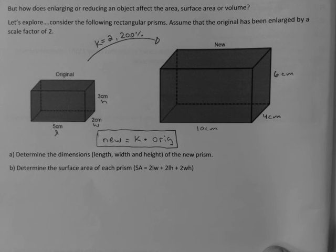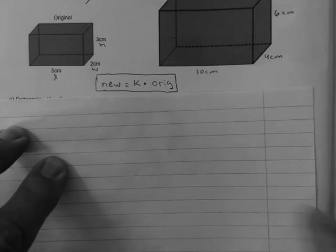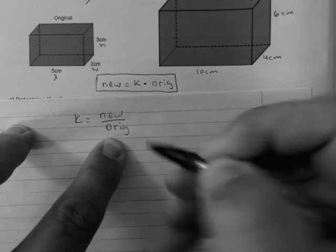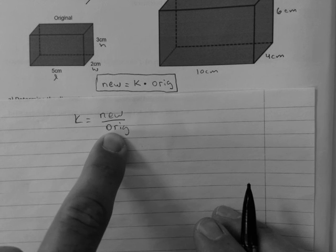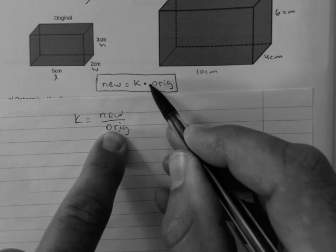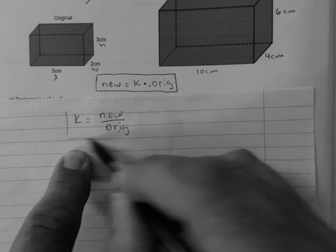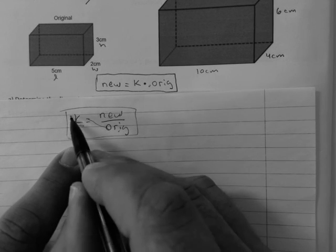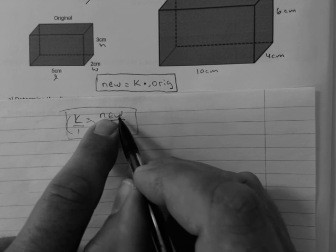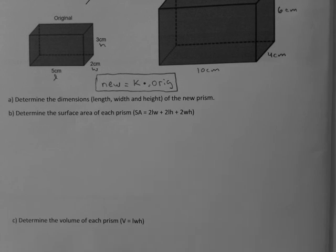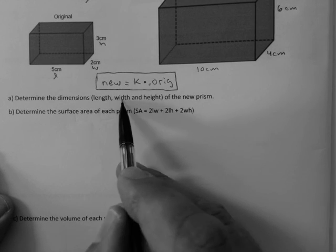But I need you to see that everything is connected. If I could just remind you, k is what? New over original. And so when you cross multiply, if you would want to know what the new is, you would go original times k. That's how I derive this. So it's not just out of nowhere, it actually goes straight back to this one. So it's always going back to this concept right here.